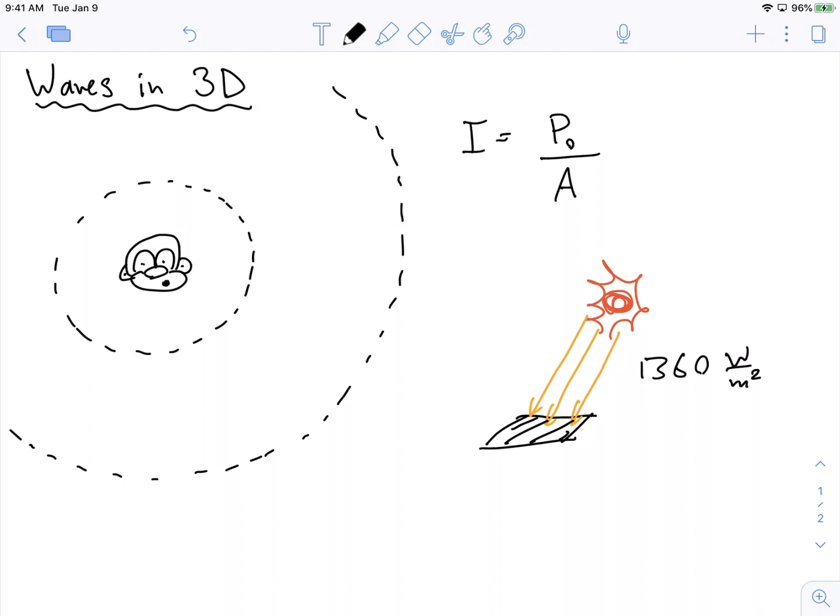And so, if we multiply this value by some area, we could get the total power that is incident on an area, right? So this is how it would work for the sun.